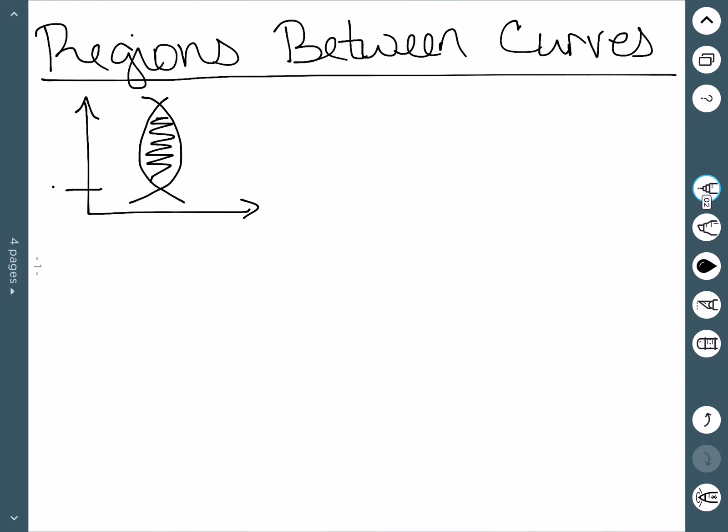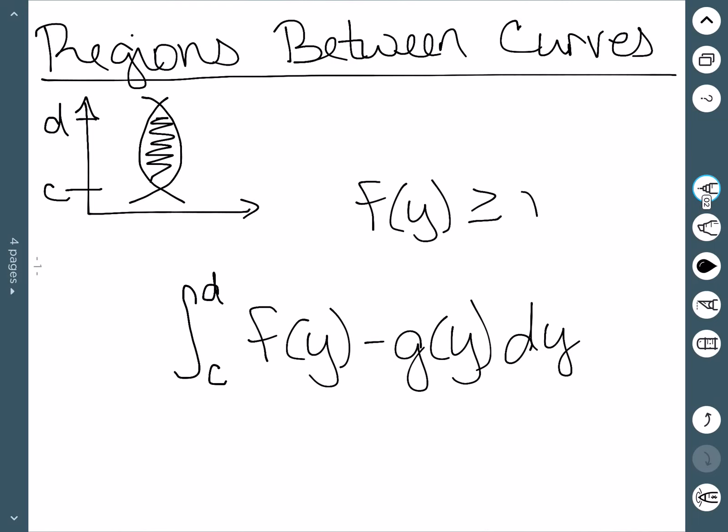In this case, if I call my intersection points C and D on the y-axis, I can do this by integrating from C to D of f(y) minus g(y) dy, where in this case we need f(y) to be greater than or equal to g(y). So f(y) will be my right function, and g(y) will be the left.